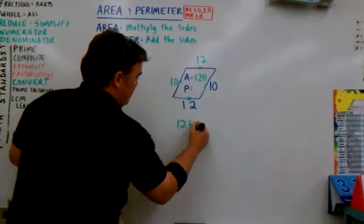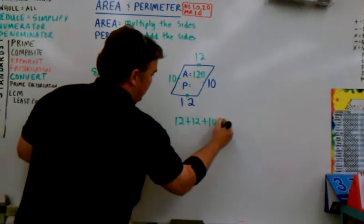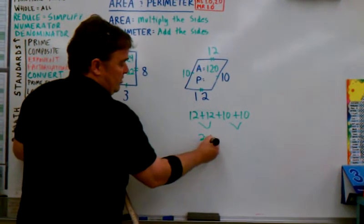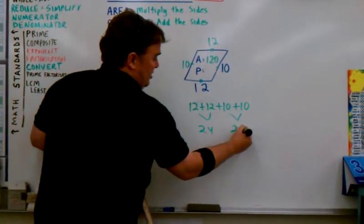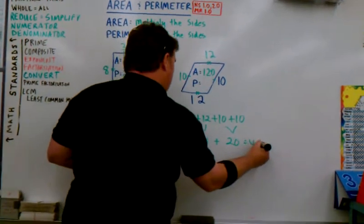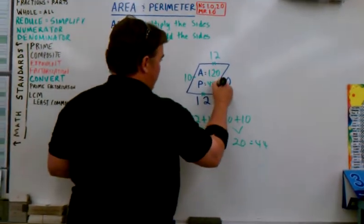Twelve plus twelve plus ten plus ten. Let's break it down so it's easier to do. Twelve and twelve is twenty-four. Ten and ten is twenty. Twenty-four plus twenty equals forty-four. Let's put that right there. Forty-four.